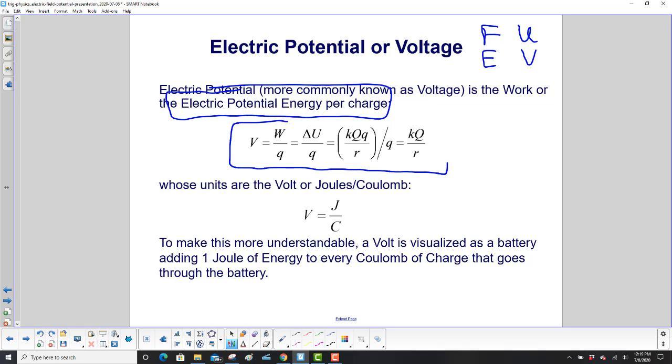So voltage is work over charge, which is delta U, change in potential energy over charge. And here is our potential energy, KQQ over little r. We divide that by that little q again. It goes away, and we have KQ over r.